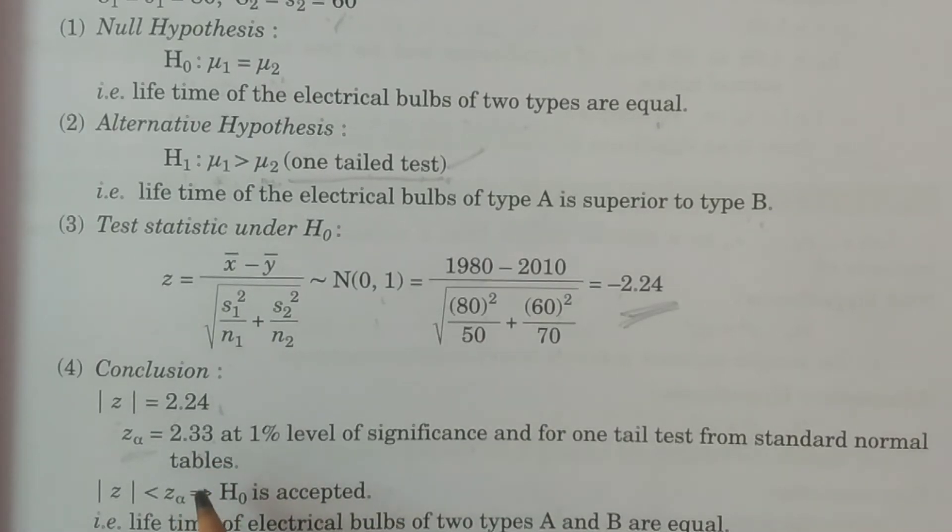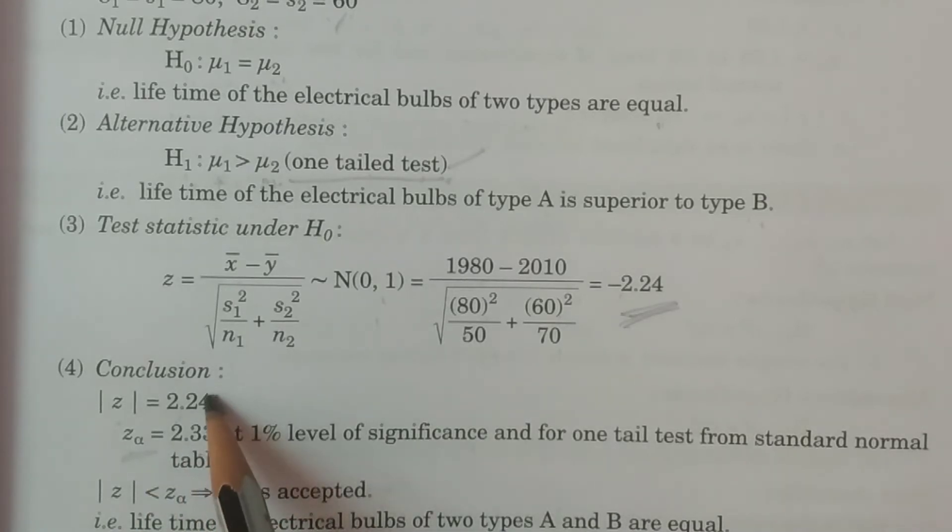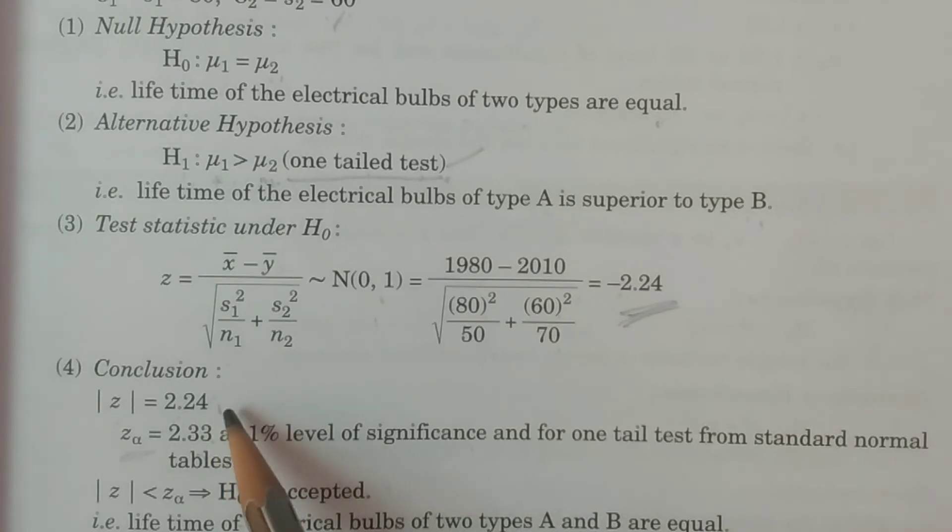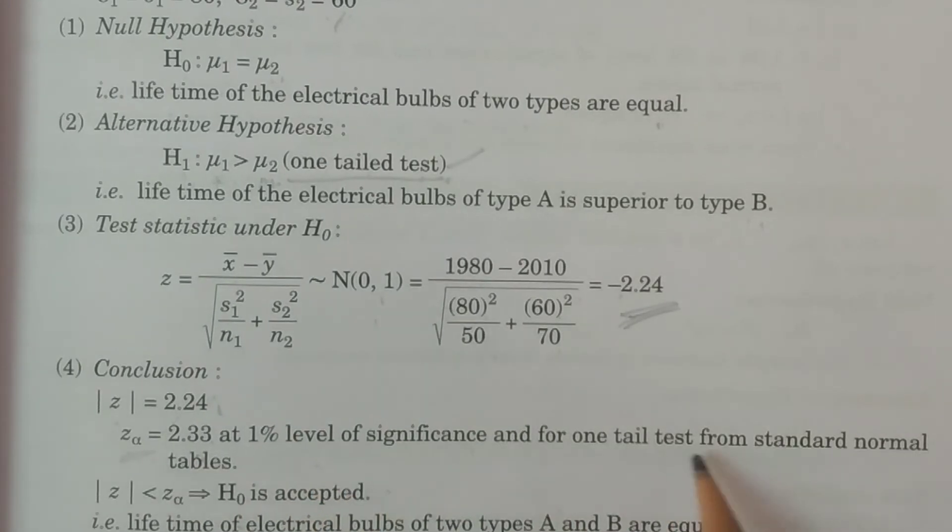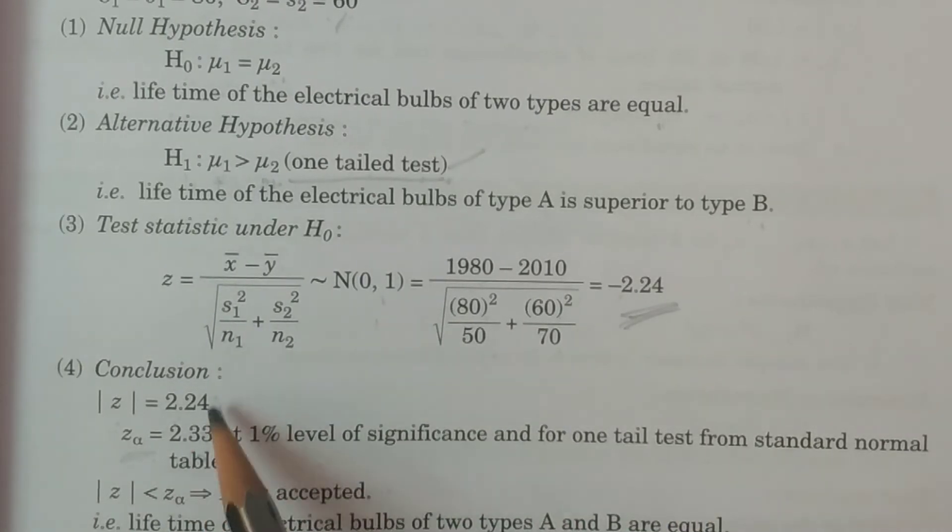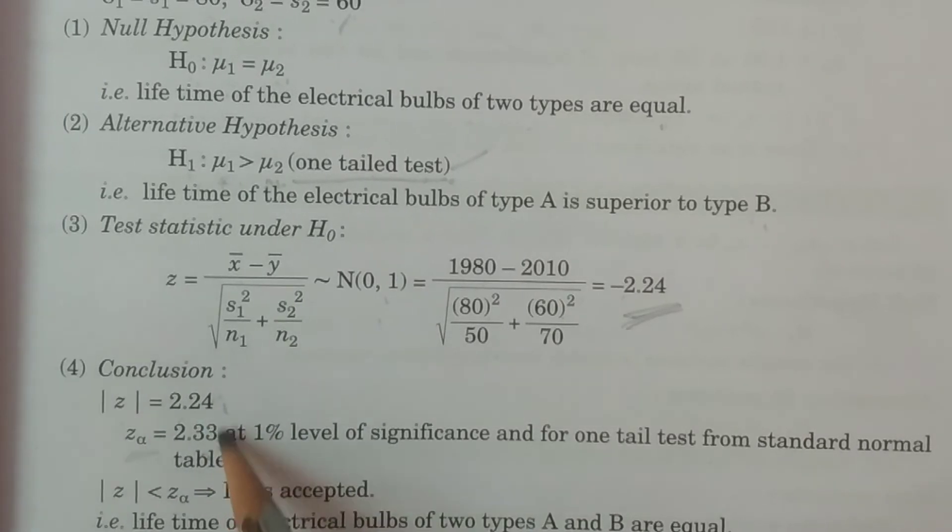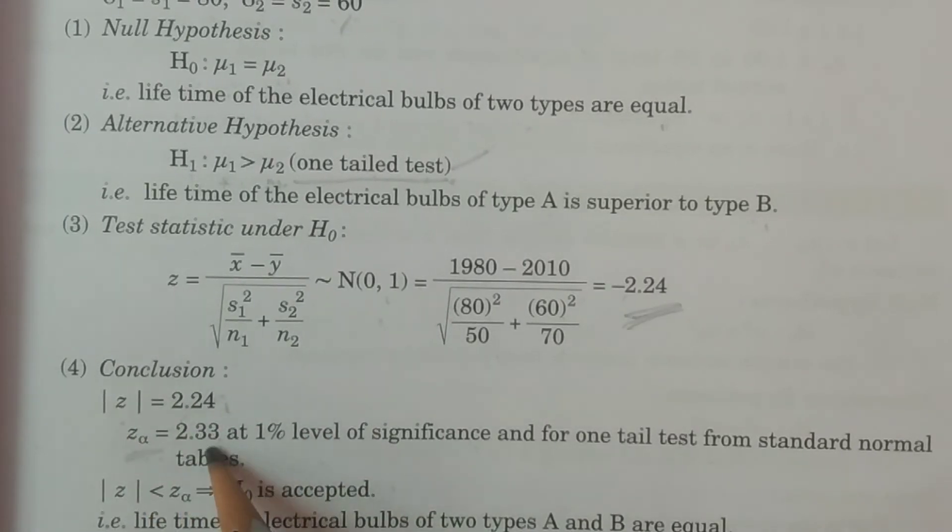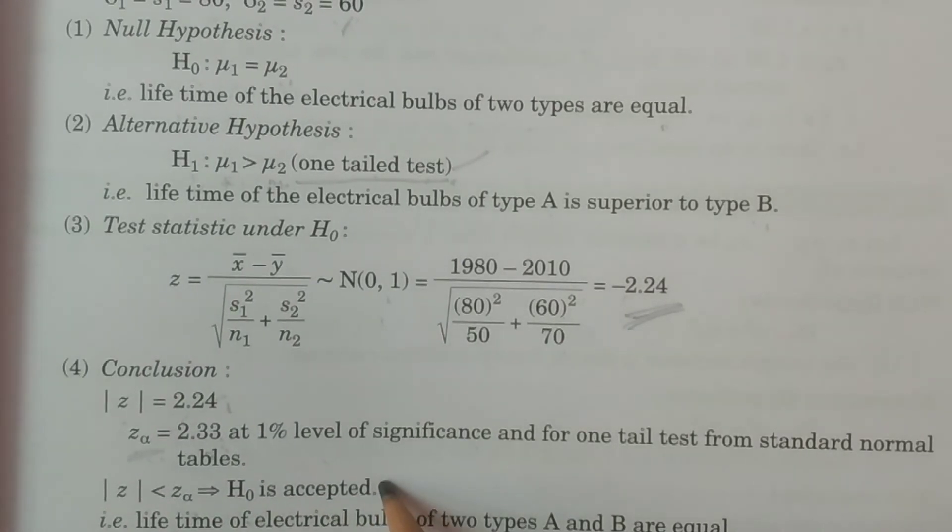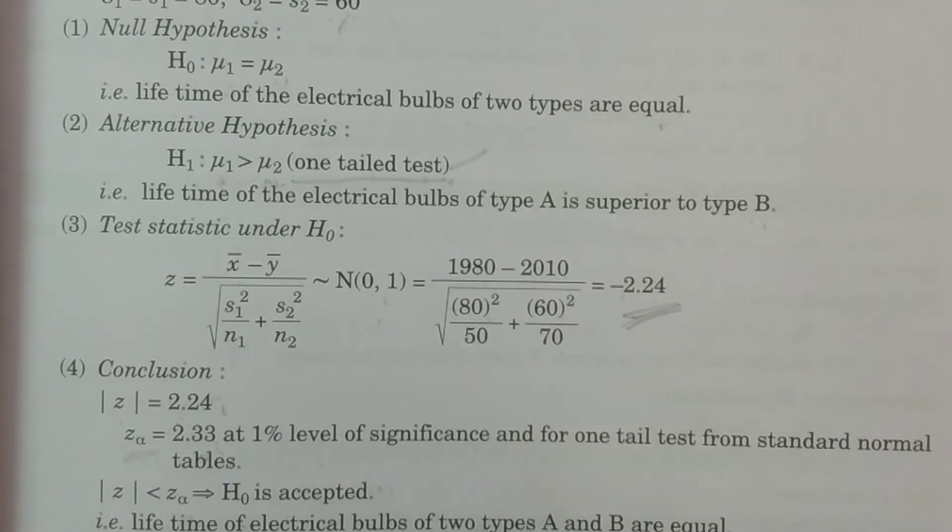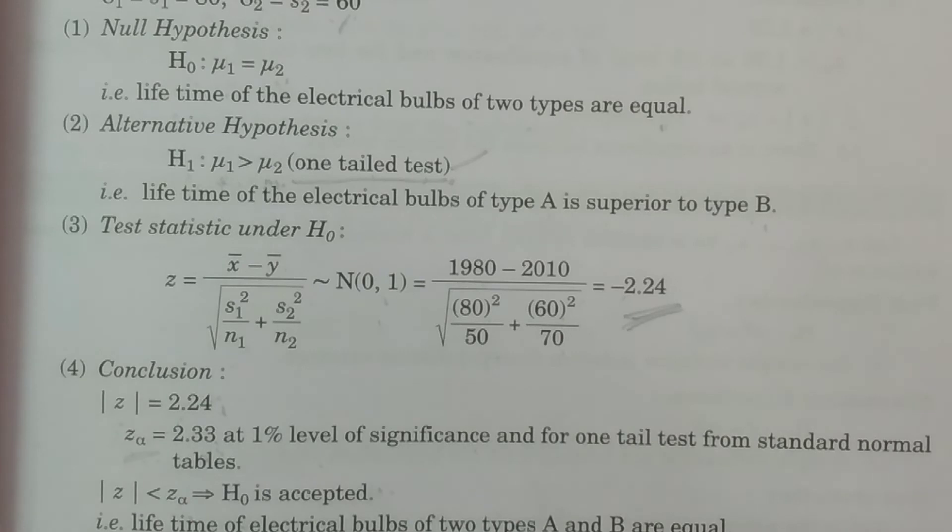Z alpha equals 2.33. Modulus of z is 2.24. Compare: 2.24 is less than 2.33. Therefore, modulus of z is less than z alpha. That is, H0 is accepted. H0 is accepted, which means the lifetime of the electrical bulbs, two types A and B are equal.